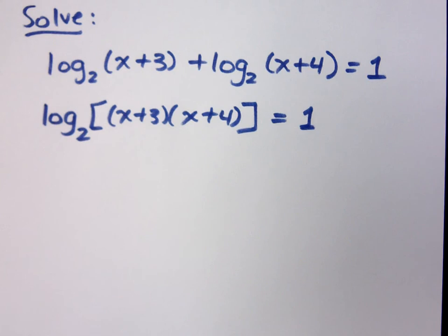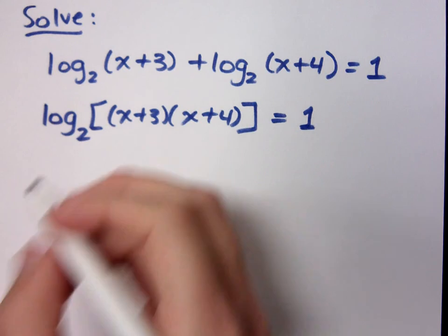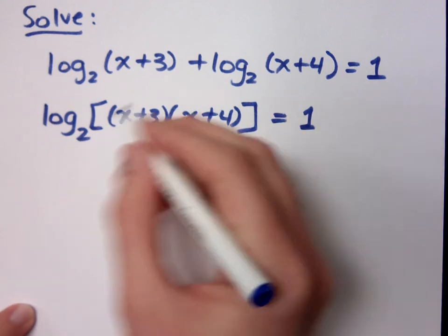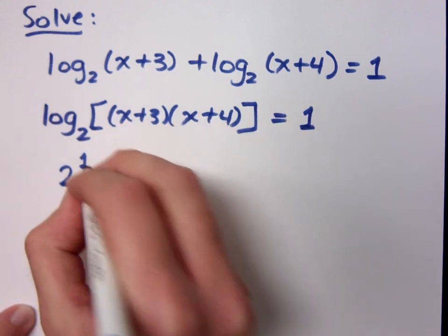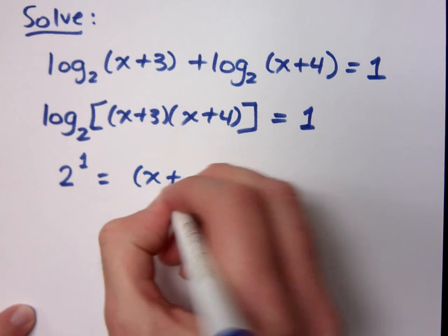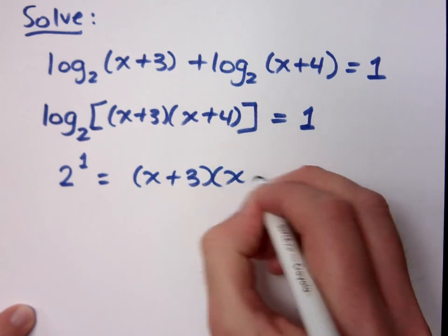Now, I don't really like the way this is written, because I've got a log on one side, but I don't have a log on the other side. But you know what I can do? Do you remember that loopy-loo? What does a loopy-loo say? 2 to the first power is equal to x plus 3 times x plus 4.